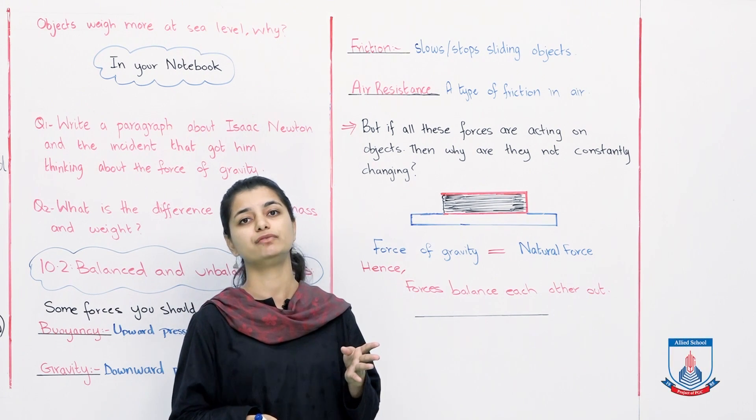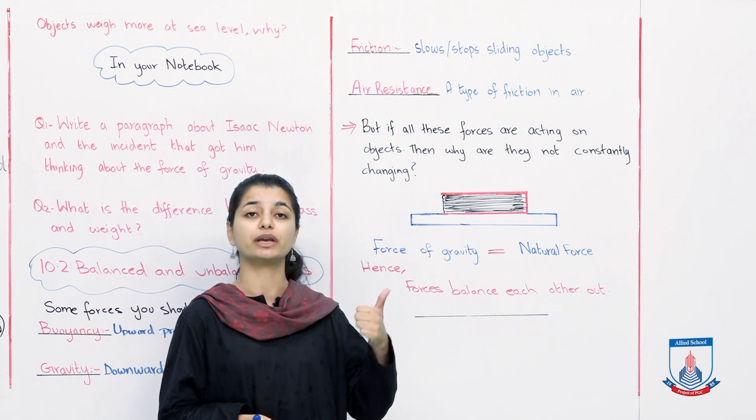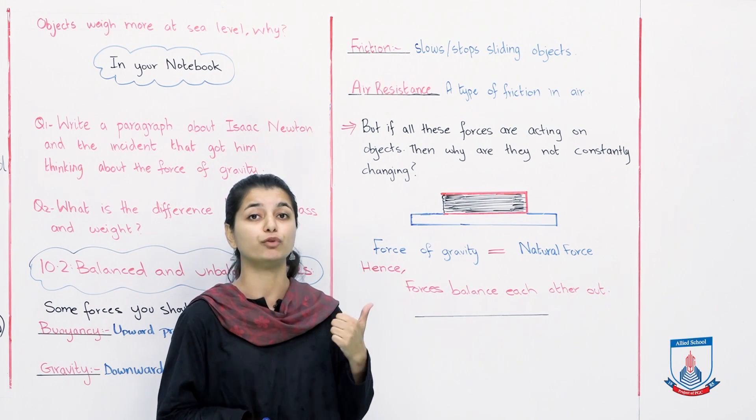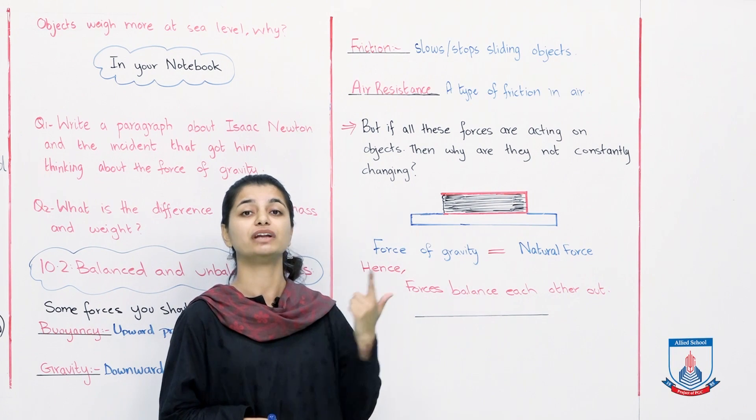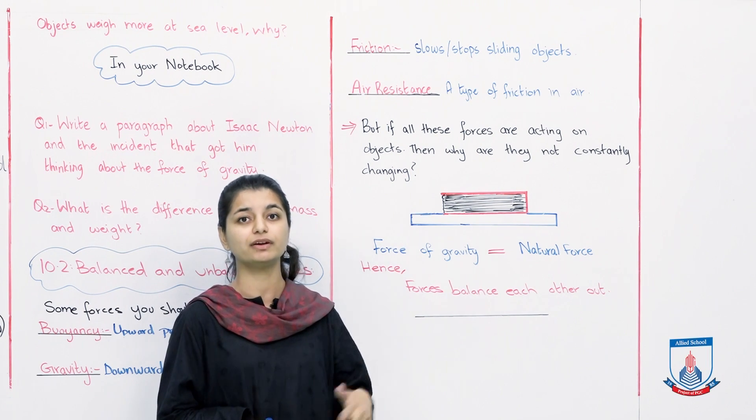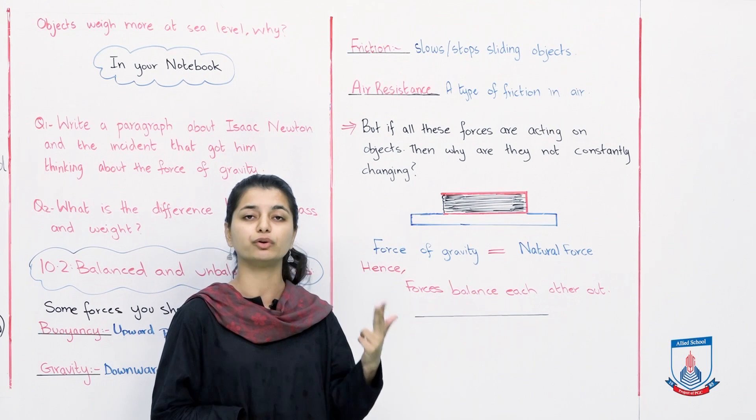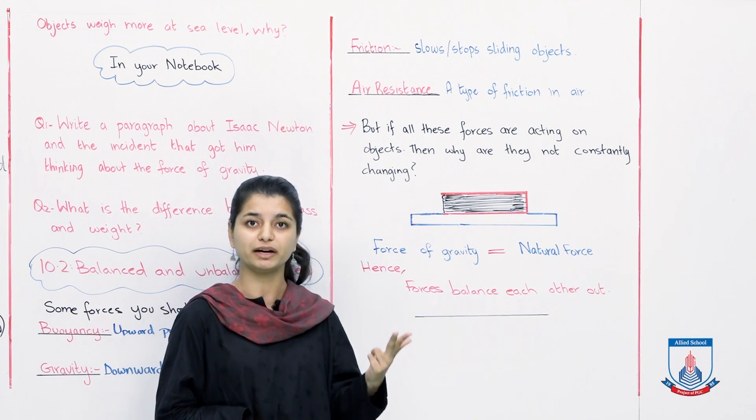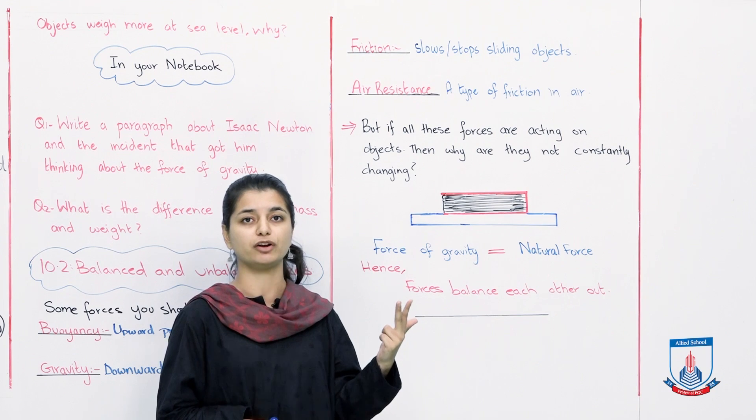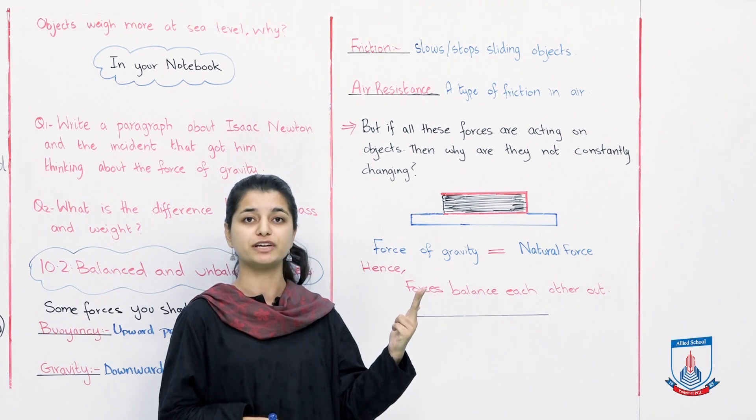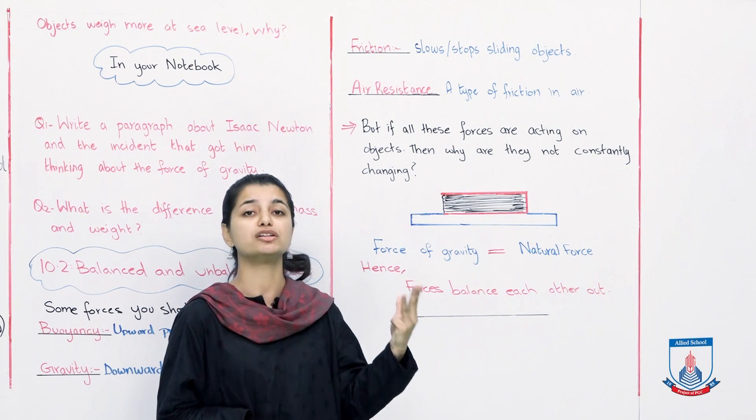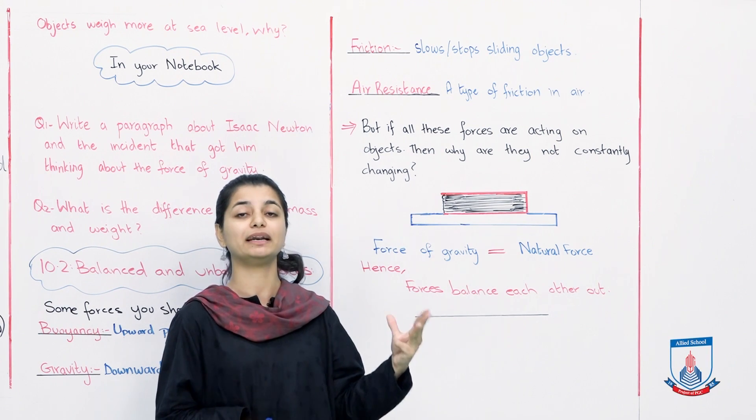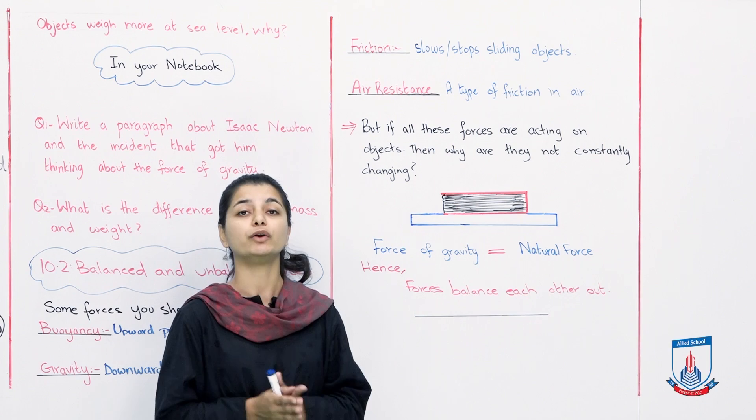So we have discussed which four types of forces? Buoyancy, which allows objects to float in water. Then we discussed gravity, which makes everything have a downward pull on Earth. Then we discussed friction, which is due to rubbing two objects with each other, slowing down or stopping of an object. And then we talked about air resistance, which is also like friction, a type of friction, but it occurs in air. What we do now is we will study examples of forces balancing each other.